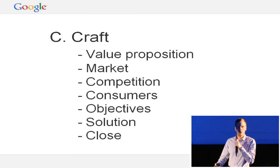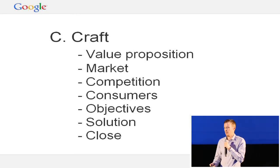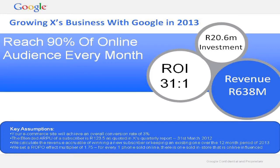Let's run through a best practice example. This was a pitch we did recently in the telco industry for one of the big operators. This first point in the seven-point framework is the value proposition — we wanted to come up with something that would grab the CMO's attention. We basically said: for an investment of 20 million rand over the next year, we can drive 638 million in revenue at an ROI of 33 to 1.